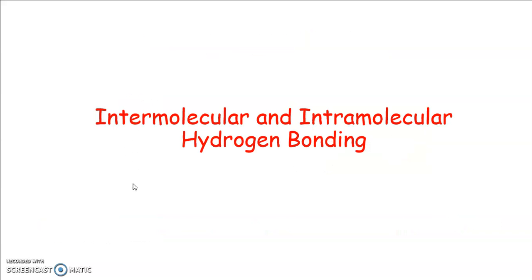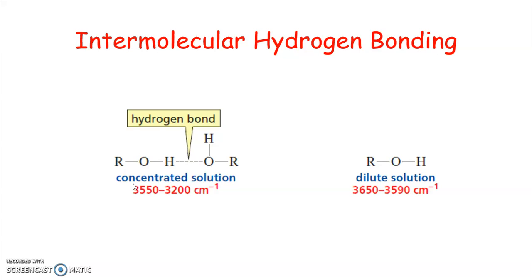The two types of hydrogen bonding, intramolecular and intermolecular, can be differentiated by the use of IR spectroscopy. The extent of intermolecular hydrogen bonding depends on the concentration of the solution, and hence the position and shape of the IR band also depends on concentration. For alcohols and phenols at low concentration, a sharp band appears at 3650 cm⁻¹ in addition to the broad band at 3350 cm⁻¹.